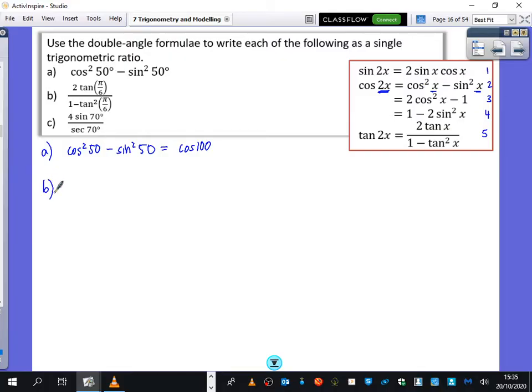Part B of the question, we have 2 tan of pi over 6 all over 1 minus tan squared of pi over 6. Now it's pretty obvious which of these it looks like. It looks like number 5. And again, these angles here will double. So I'm going to double this pi over 6. So that is going to be tan of 2 times pi over 6, which is the tan of pi over 3. And the tan of pi over 3 is just root 3.